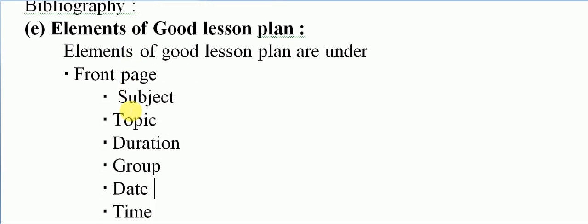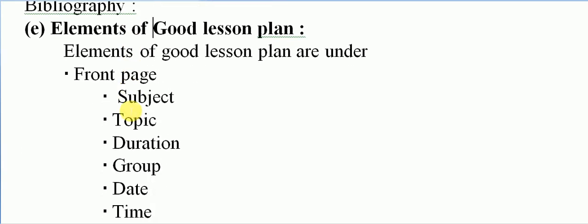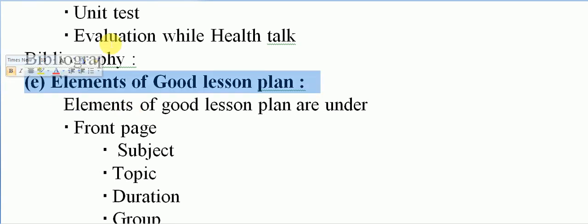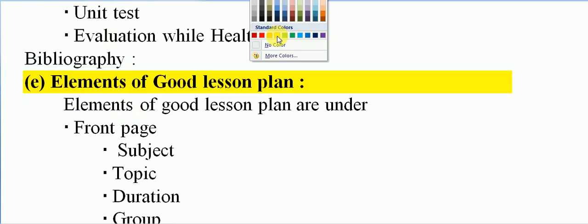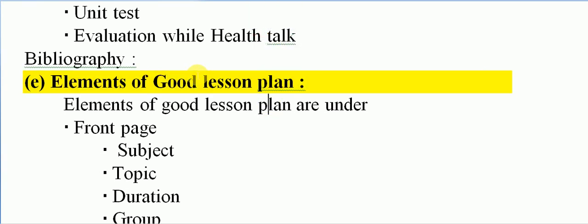At the end of the class, we must give an assignment to the student — preparation of different types of AV aids individually or in group work. Evaluation is by unit test and evaluation during health talk in the community, covering selection of the group, introduction of the topic, self-introduction, introduction of the college, content covered, and response of the group. Also include a bibliography. The elements of a good lesson plan will be discussed in the next video. If you like this video, please like the channel — your one like is very motivating. Please share this video in your friend circle. Thank you very much.